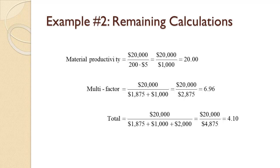Adding the $2,000 of overhead yields total cost of $4,875. Dividing that into the $20,000 of output yields 4.10, so each dollar of input yields $4.10 of output.